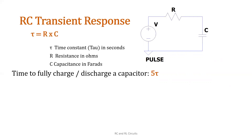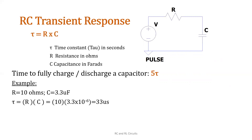Let's have an example. If we have a resistance of 10 ohms and a capacitance of 3.3 microfarads, the time constant is equal to R times C, resistance times capacitance. So 10 times 3.3 microfarads gives us 33 microseconds.